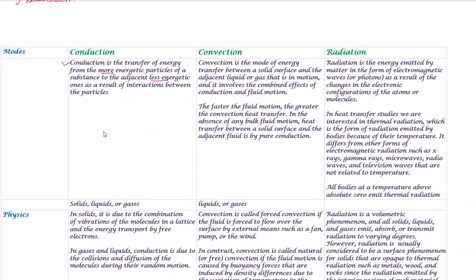First, we have conduction — the higher energy particles transfer heat to the lesser energy particles. Convection: if you have fluid flow, gas flow, or fluid motion, the heat transfer will be higher with faster fluid motion. That is the convection heat transfer. If there is no fluid motion, it will be pure conduction. Radiation will be emitted by matter in the form of electromagnetic waves. In heat transfer, we focus on thermal radiation due to temperature difference.